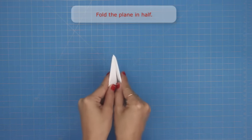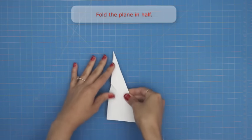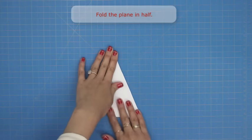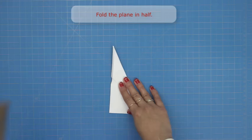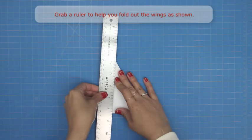Fold the plane in half. Grab a ruler to help you fold out the wings as shown.